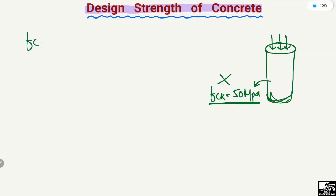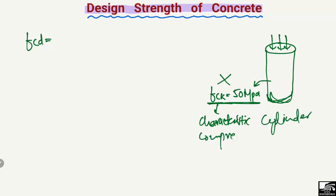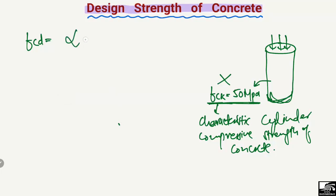What we do is take the design strength of the concrete. Design strength means we reduce the characteristic compressive strength of the concrete. In design we reduce this characteristic value using the formula: αcc × fck / γc.